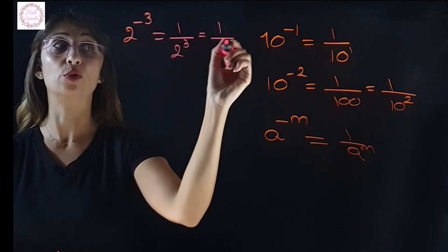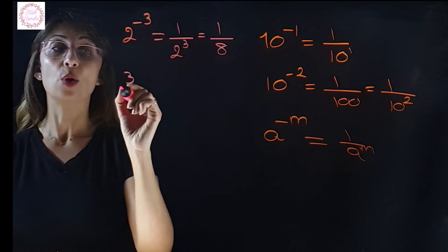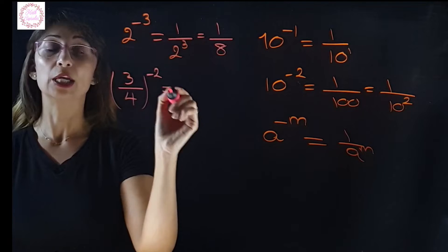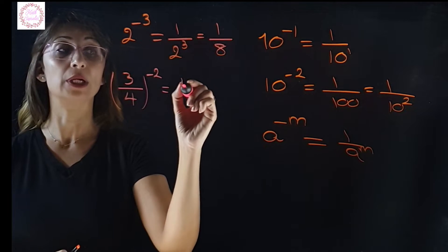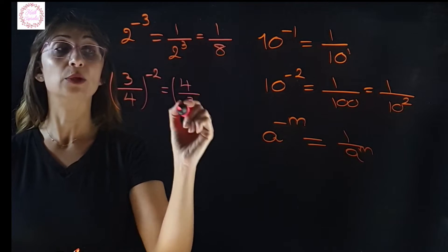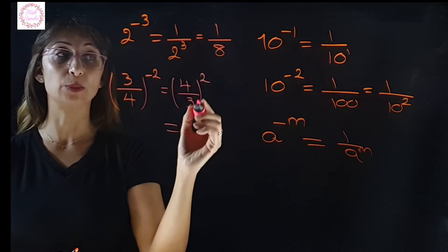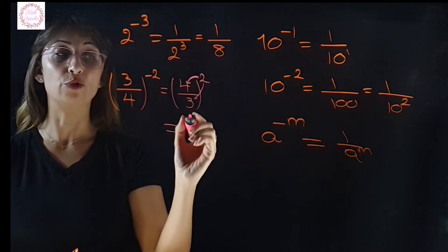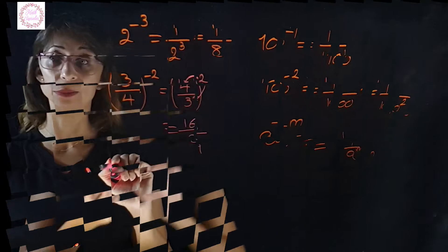And if we have 3 over 4 to the power of negative 2, we have a fraction — we flip it upside down to become 4 over 3, and we put the positive exponent. Then we distribute this exponent on both 4 and 3, so 4 power 2 becomes 16 and 3 power 2 is 9.